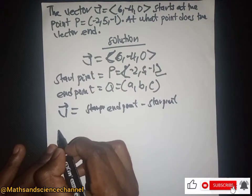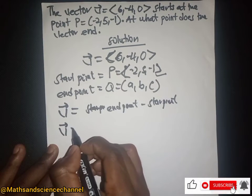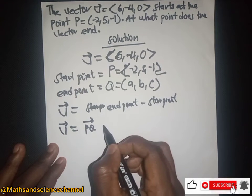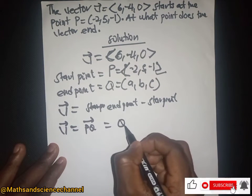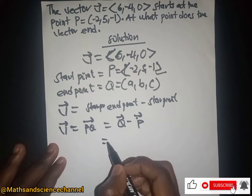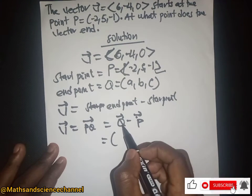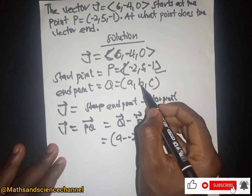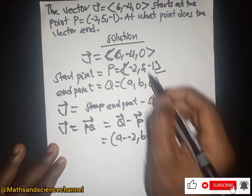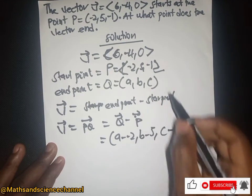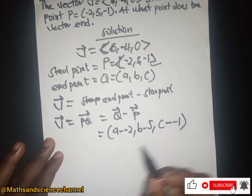So we can write this as vector V equals vector PQ, which is just equal to Q minus P. So we have Q here: a minus (-2), then we have b minus 5, and we have c minus (-1). This is just going to give a+2, b-5, and c+1.